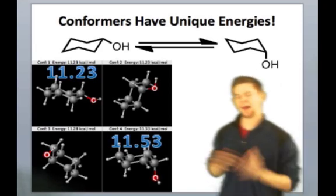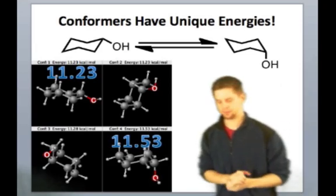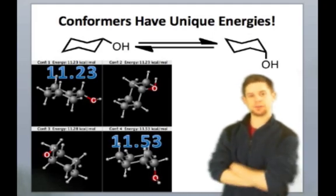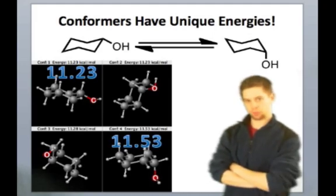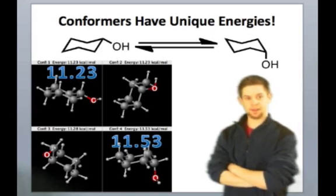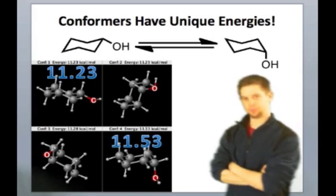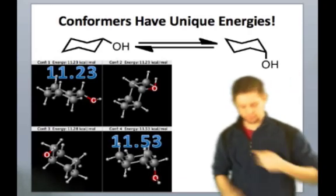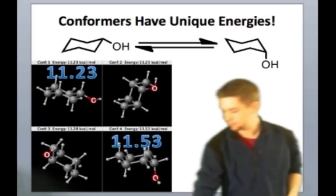We see this for a wide variety of substituents, this interesting observation that the equatorial conformer, or the substituent that puts the group equatorial, is more stable than the one that puts it axial. And we'll see why that's the case here in a second.